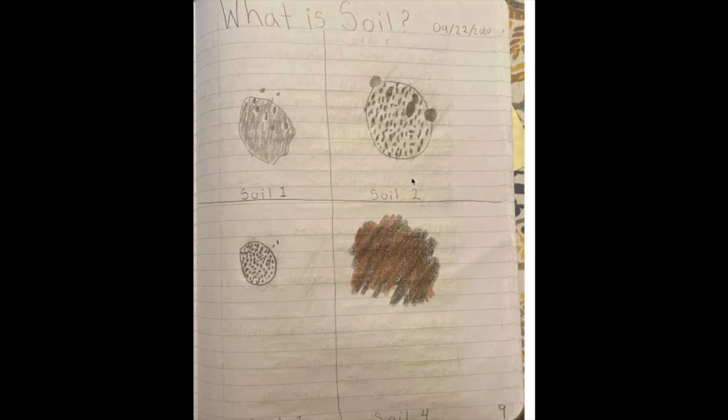On page 9 is where we start our investigation. Page 9 is called, What is soil? This is when we were looking at different soil samples. These soil samples, this is what we observed when we saw those samples.